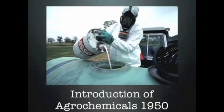The cotton industry changed when agrochemicals were first introduced. During the Second World War, the chemical industry had been inventing new ways to kill living things. It turned out that some of these chemicals could kill not only people but bugs and weeds. And so, the agrochemical industry was born.